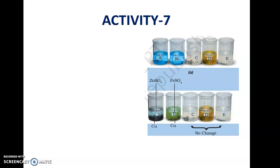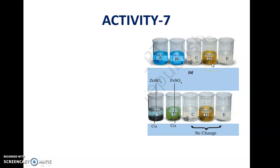These are five beakers: A, B, C, D, and E. In beakers A and B you will find a light blue solution. In beakers C and E there is a transparent liquid — a transparent solution. In beaker D there is a brownish color solution.